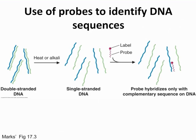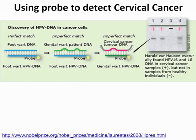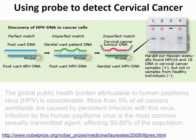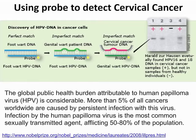Probing is a way to identify a DNA sequence. With double-stranded DNA, we first separate the strands using heat or alkali. Once we have single-stranded DNA, we insert a probe that is complementary to the sequence of DNA, causing it to hybridize. This is how we identify the DNA sequence of interest. Probing can also be used to detect certain diseases like cervical cancer.